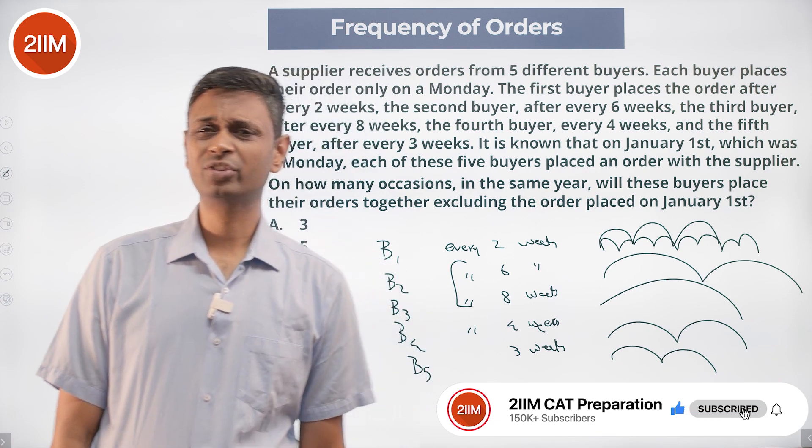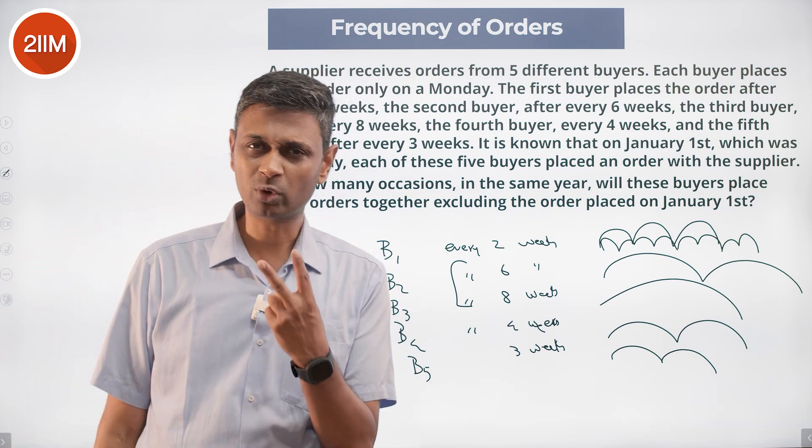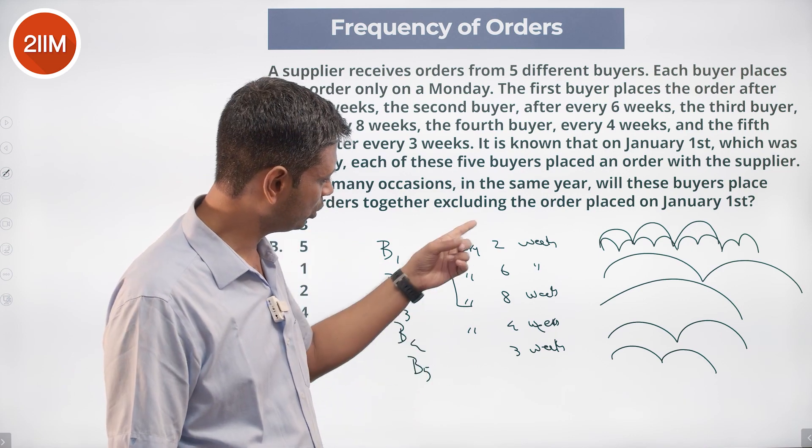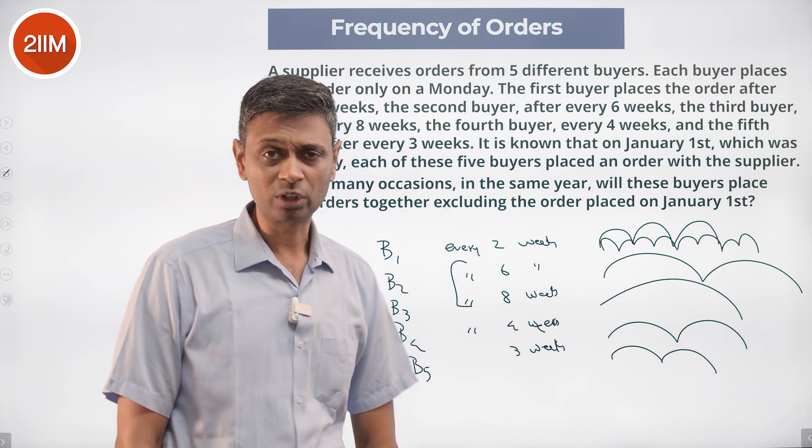6 into 8 is 48, 6 into 4 is 24, 8 into 3 is 24. LCM is 24. 24 is a multiple of 2, 6, 8, 4, and 3. Any less than that will not be a multiple of one of these.